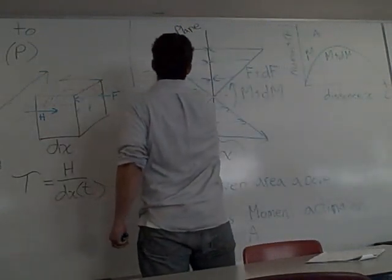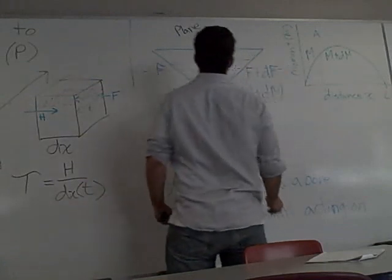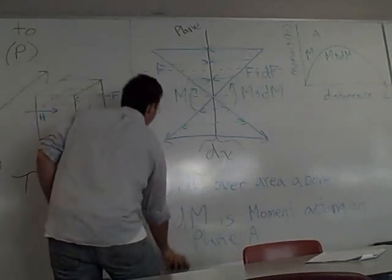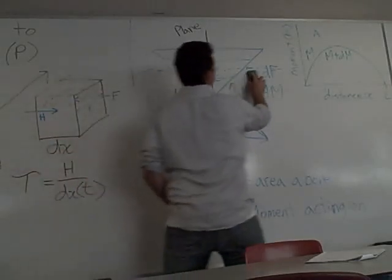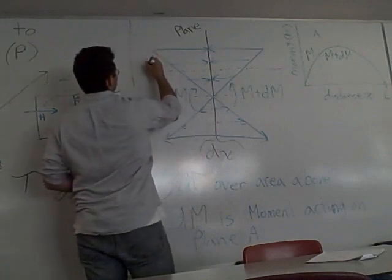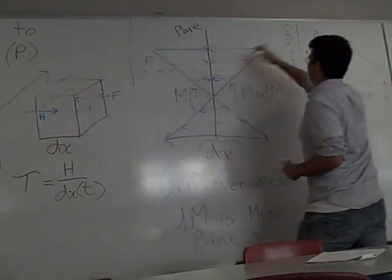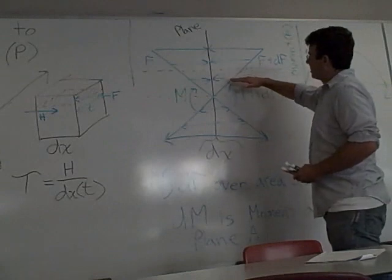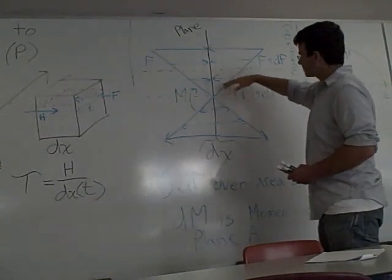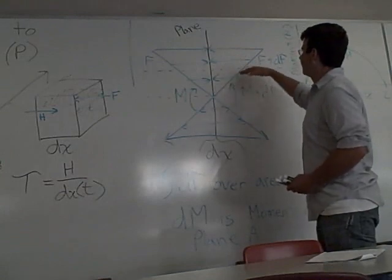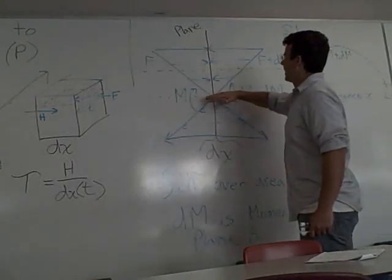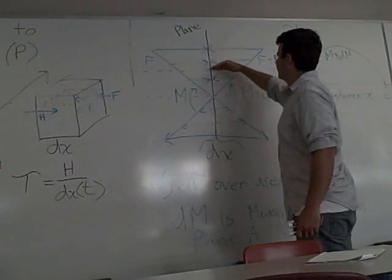If we add in our shear plane into this diagram, we'll notice that the force acting on the area above the shear plane only accounts for f plus df. If we lower the shear plane, there's going to be a greater force because the area above the shear plane is greater. So you have to account for all the force above wherever the shear plane is.